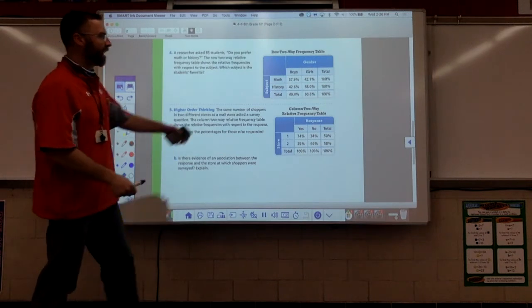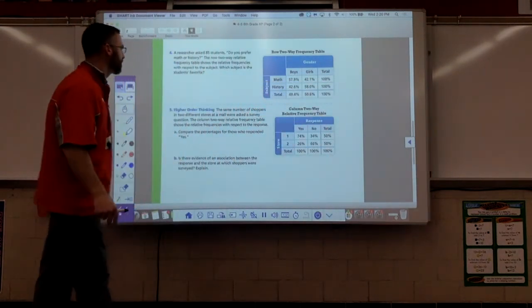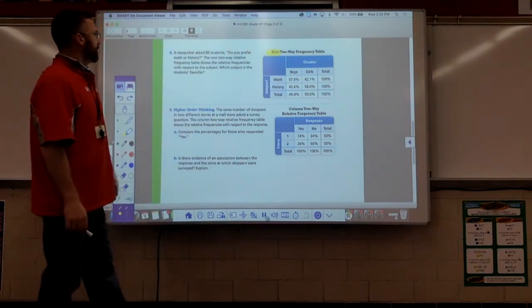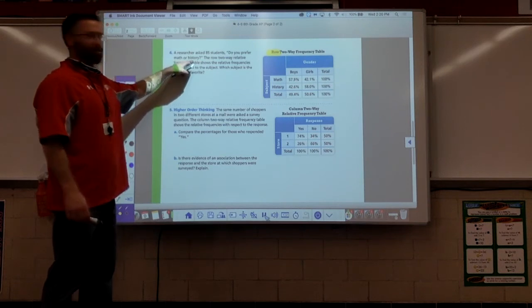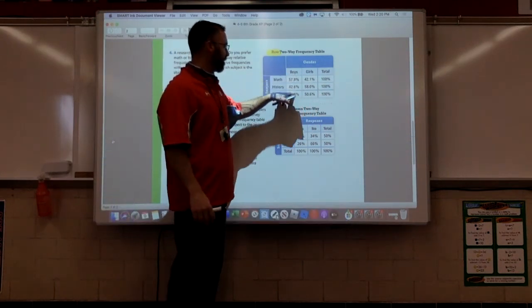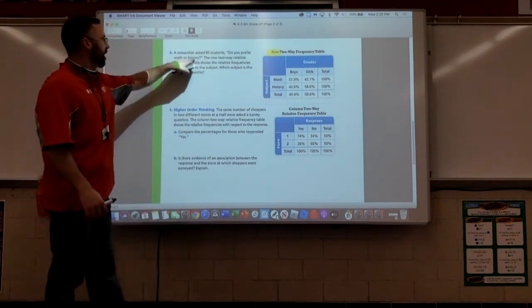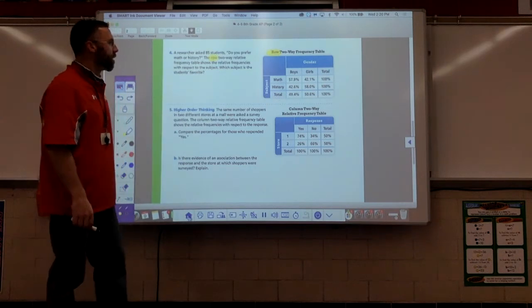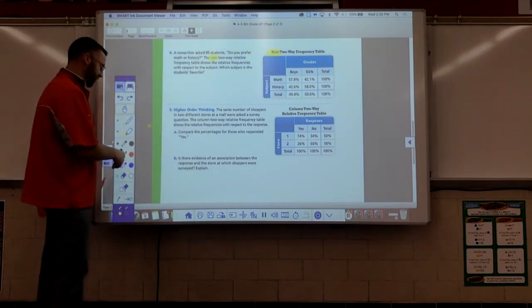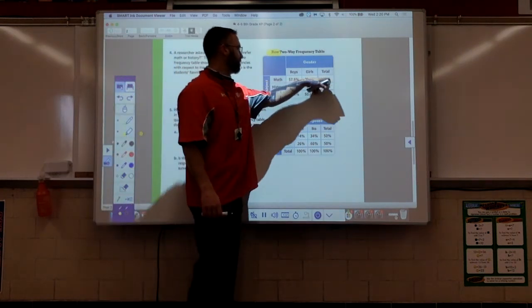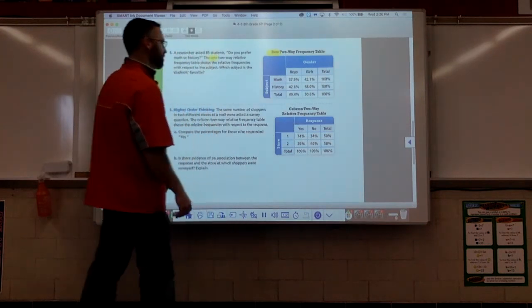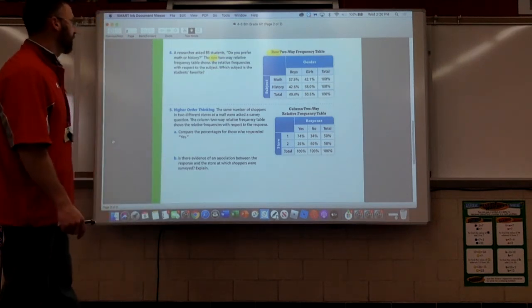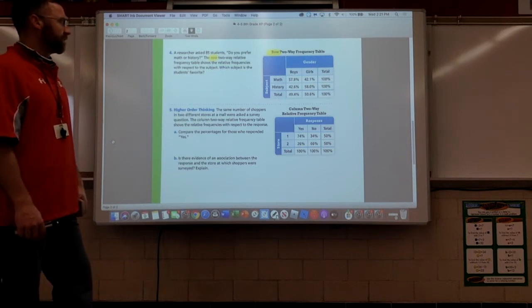Another one's given to us, I don't have to calculate. The relative frequencies are already given to us. Are those column relative frequencies, aren't they? No, it says row. A researcher asked 85 students, do you prefer math or history? If we ask you guys, we wouldn't even need this table because 100% of the people would say math. No contest. The two-way relative frequency table shows the relative frequencies with respect to the subject. Which subject is the student's favorite? When we look at this, boys and girls, which column are we going to look at? Are we going to look at rows? What are we going to look at here? Which subject is the student's favorite? Let's look at students. Do we care if they're boys or girls? No.